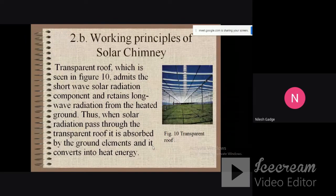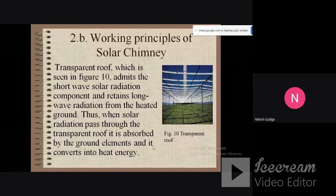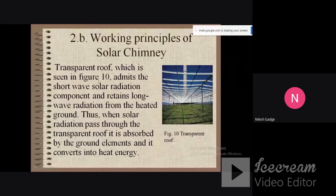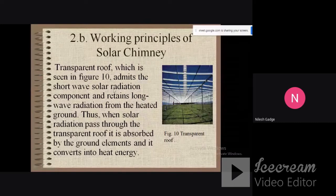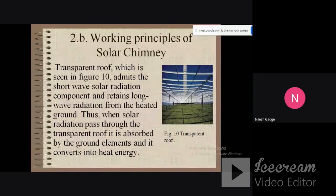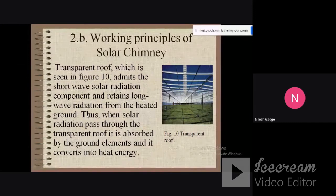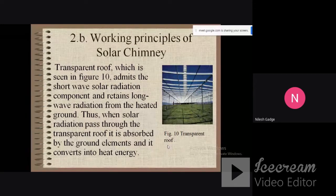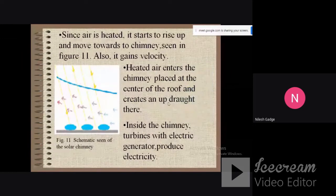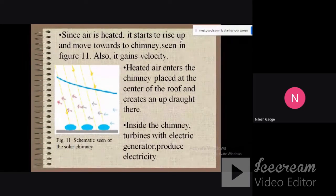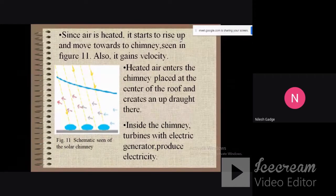Working principle of the solar chimney: The transparent roof, which is seen in figure 10, admits the short wave solar radiation component and retains long wave radiations from the heated ground. Thus, when solar radiation passes through the transparent roof, it is absorbed by the ground elements and converts into heat energy. Since air is heated, it starts to rise and move towards the chimney in the figure.